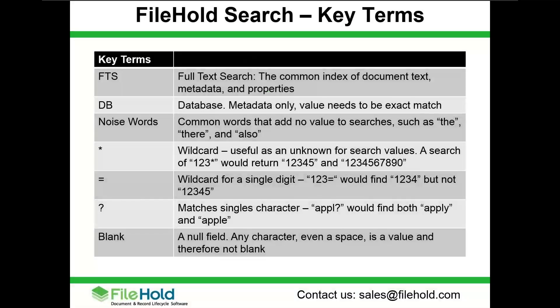Before diving in further, let me quickly go over some key terms for search. The first is FTS — full text search. That's our common index of document text, metadata, and file properties. The FTS is a filtered list. The database, on the other hand, is a much more limited collection because it only contains metadata for the documents, and values in a database search need to be exact. If you want a broader search, use the FTS. The database can be more efficient but requires an exact match on metadata only.